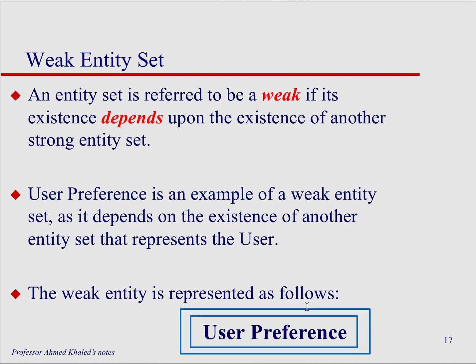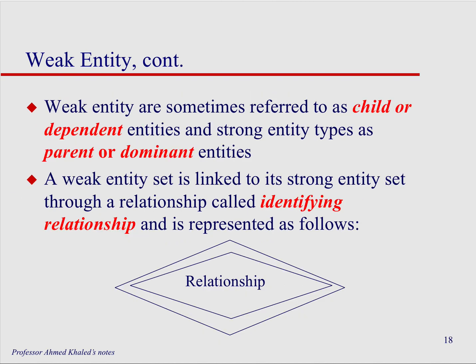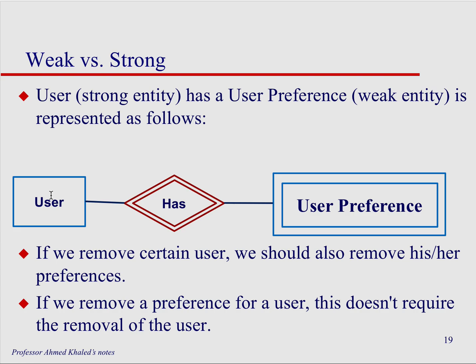How do we depict that? We use a double rectangle for the weak entity. Weak entities are sometimes referred to as child or dependent entities, while the strong one is the parent or dominant entity. We still need to link the weak entity to the strong entity through a relationship, and this relationship is also shown with double diamonds.